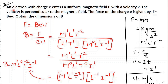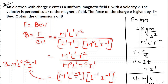Now come to the next numerical. An electron with charge E enters a uniform magnetic field. At that time its velocity is V. The velocity is perpendicular to the magnetic field. The force on charge E is given by F equal to BEV. So the force equation is BEV, where B is the magnetic field, E is the charge on the electron, and V is the velocity. We have to obtain the dimensions of B.